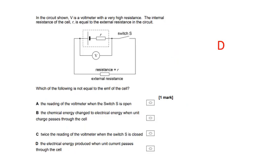This next one here is about internal resistance. Now, which of the following is not equal to the EMF of the cell? So the reading on the voltmeter when the switch is open. Well, yes, I'm going to put a tick next to that. That is equal to the EMF.